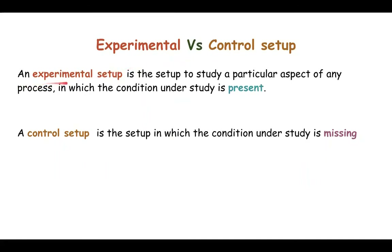An experimental setup is the setup to study a particular aspect of any process in which the condition under study is present. But when that condition under study is missing, we call that kind of a setup a control setup.